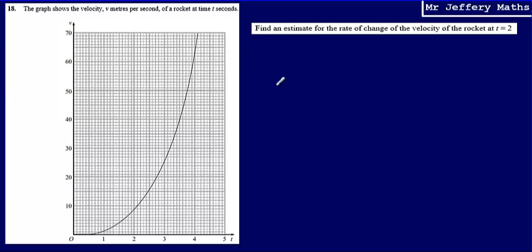This is question 18 from a series of videos looking at the Edexcel practice papers. Here we're told that the graph shows the velocity, v meters per second, of a rocket at time t seconds. What we can see is we've got a graph here with time going along the x-axis and velocity going up the y-axis.